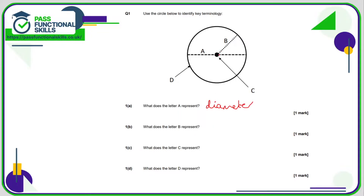B is a line from the centre to the edge of the circle, which is a radius — half the length of the diameter. C is the centre of the circle. And D, the edge of the circle is called the circumference.